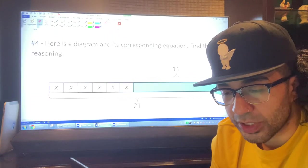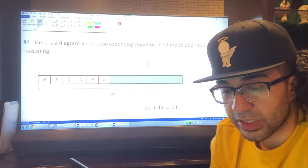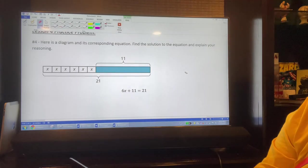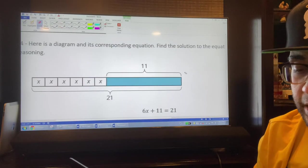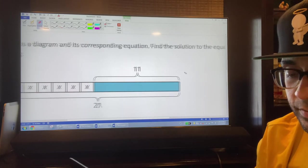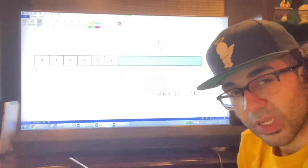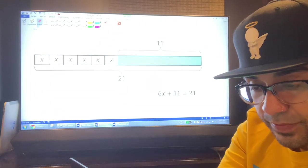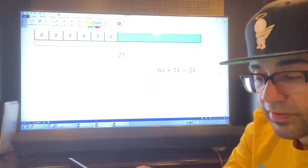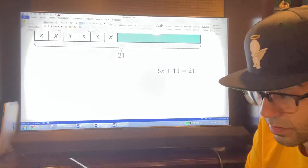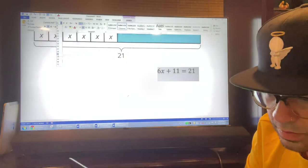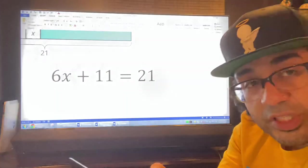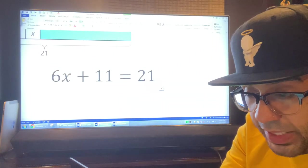Let's go to this last question and then we'll be done for today's lesson or today's recap. Here's a diagram and its corresponding equations. Find a solution to the equation and explain your reasoning. Here they gave us the diagram and the equation. They didn't let us do our own thinking, which I don't really love. So what we're going to do to make them happy is we're going to solve this equation first. We have 6X plus 11.